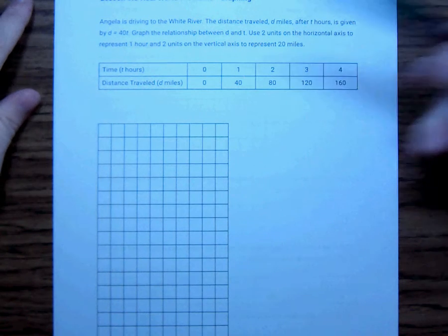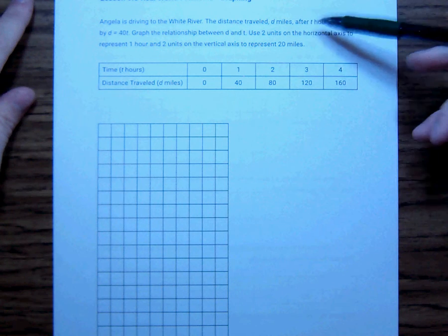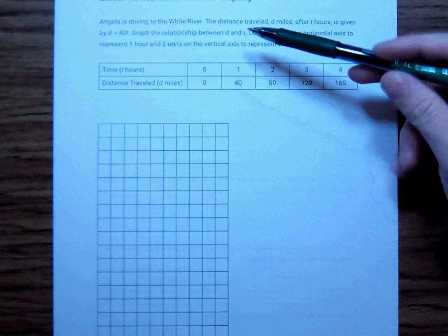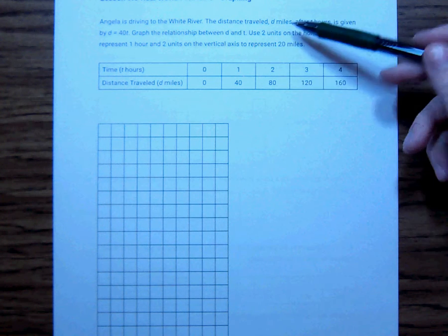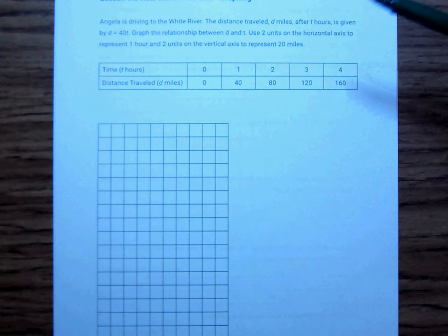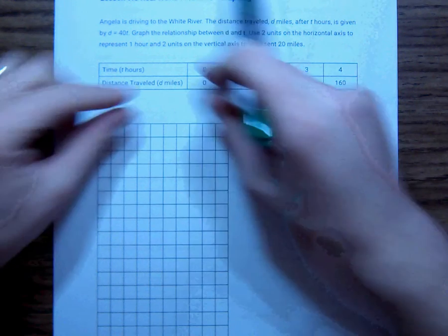So, Angela's driving to the White River. The distance traveled d miles after t hours is given by d equals 40t. Graph the relationship between d and t. Use two units on the horizontal axis to represent one hour and two units on the vertical axis to represent 20 miles. And then it also gives us this table right here.